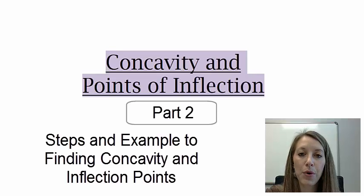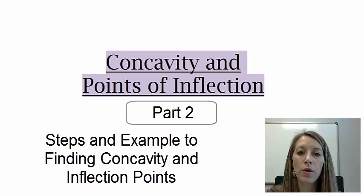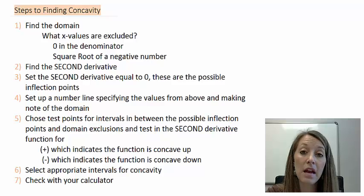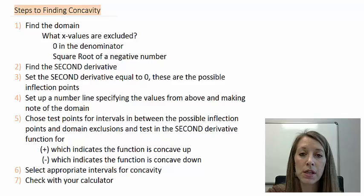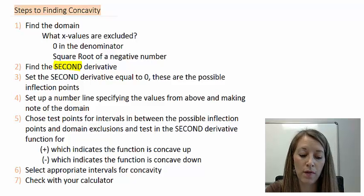Moving on with concavity and points of inflection — we've just defined what both of these were and figured out what they look like on the graph. Now the question is, if they give it to us in a function format, how do we do that? So let's go through the steps to finding concavity and points of inflection. These steps are almost identical to finding increasing and decreasing. The only thing that changes is that we use the second derivative rather than the first derivative.